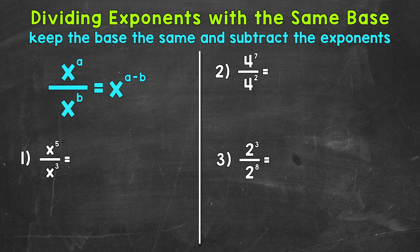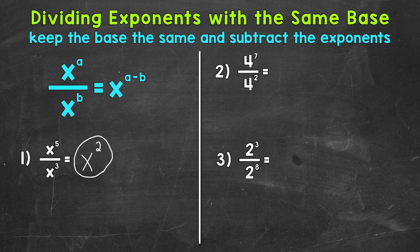Starting with number 1, where we have x to the power of 5 divided by x to the power of 3. So we keep our base of x the same, and then we subtract the exponents. So 5 minus 3 gives us an exponent of 2. So our solution is x squared, or x to the power of 2.